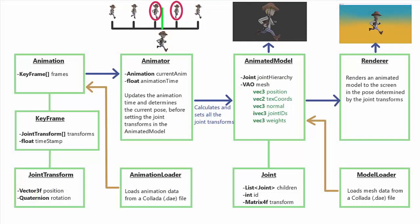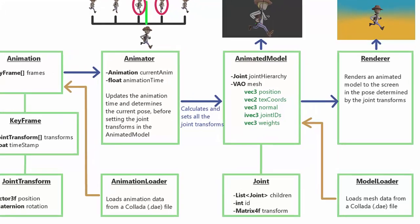So this here is an overview of the animation code that we're going to be looking at in this series. In this tutorial today I'm going to be giving you a summary of all the different sections involved to try and give you a general understanding of the concepts being used here to implement animation. And then in the upcoming tutorials I'll be covering each of these sections in much more detail, and I'll explain the specific code and maths behind each one.